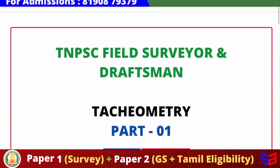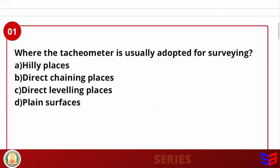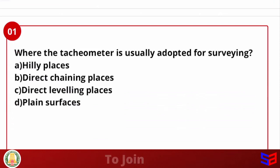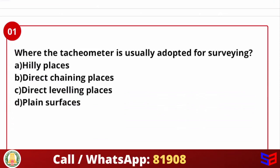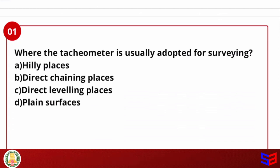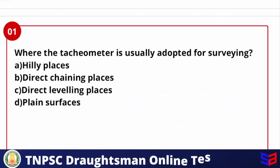Let's move on to the first question: where is tachymetry usually adapted for surveying? The options are hilly places, direct chaining places, direct leveling places, and plain surface.